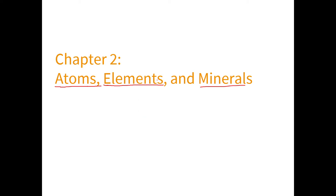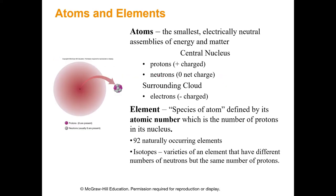Let's talk about atoms and elements. I don't want to get too far into the chemistry — hopefully you've had high school chemistry — but as a quick review: atoms are the smallest electrically neutral unit. A single atom is a type of element. If I have some random atom, it has a certain number of protons, and that number of protons defines what element something is — not the neutrons, not the electrons, the protons. We see the atomic number on the periodic table. If something has one proton it is hydrogen; if it has two protons it is helium.